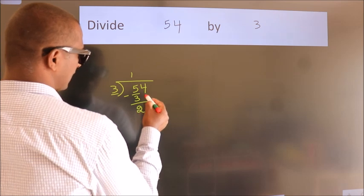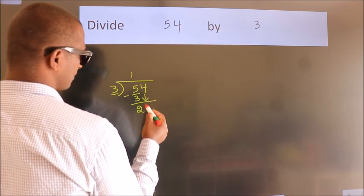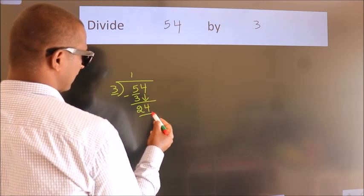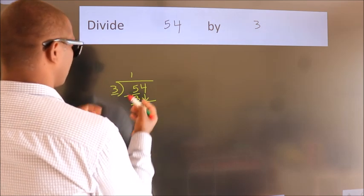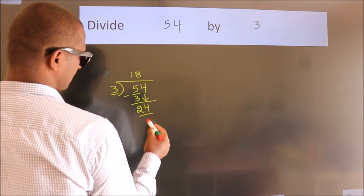After this, bring down the beside number. So 4 down, so 24. When do we get 24 in the 3 table? 3 times 8 is 24.